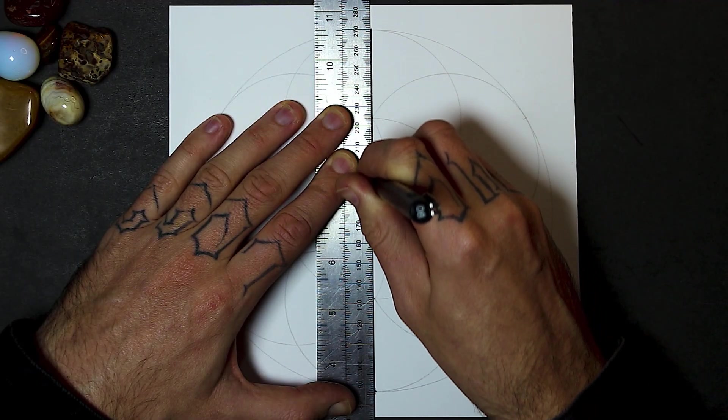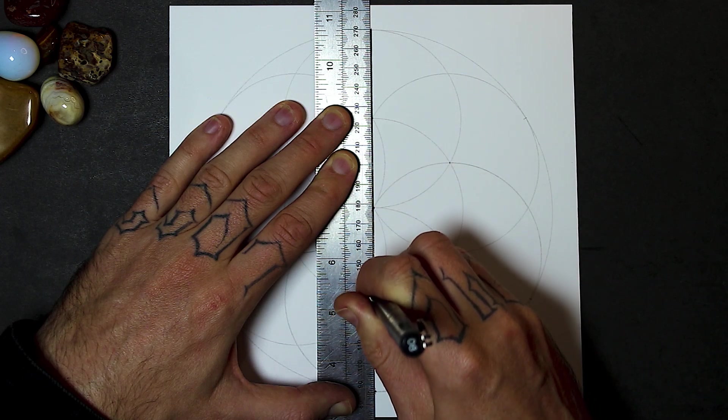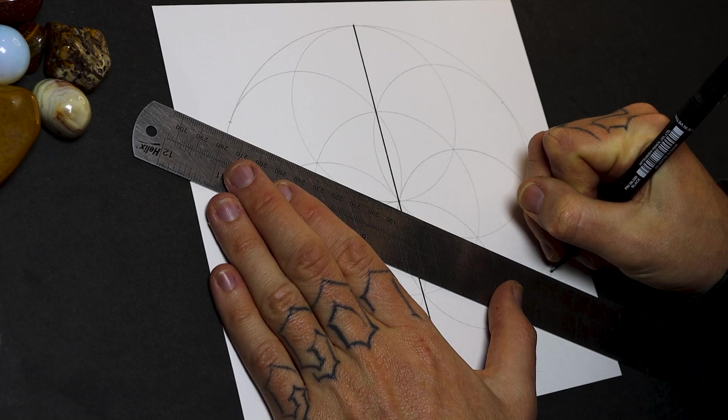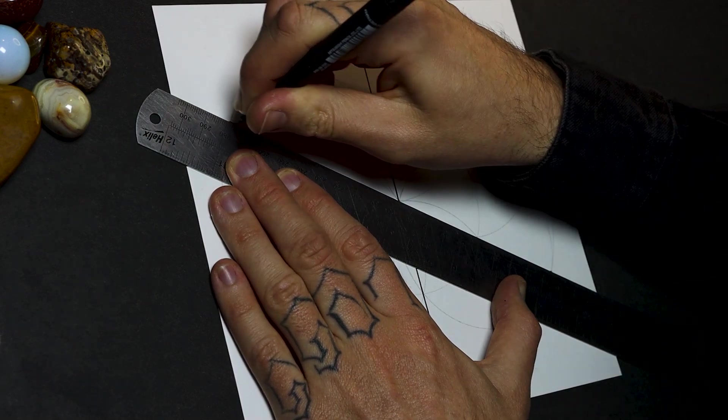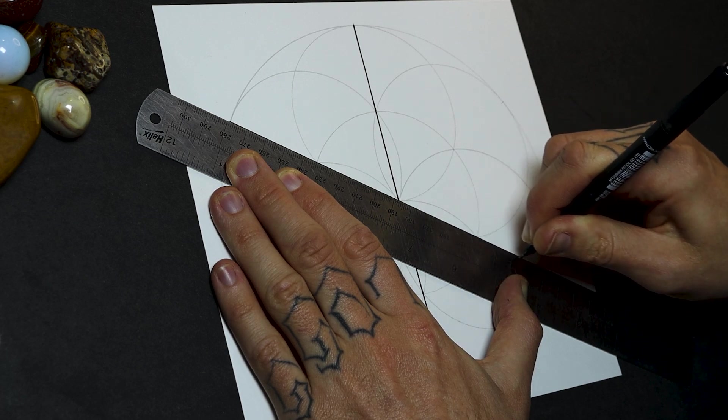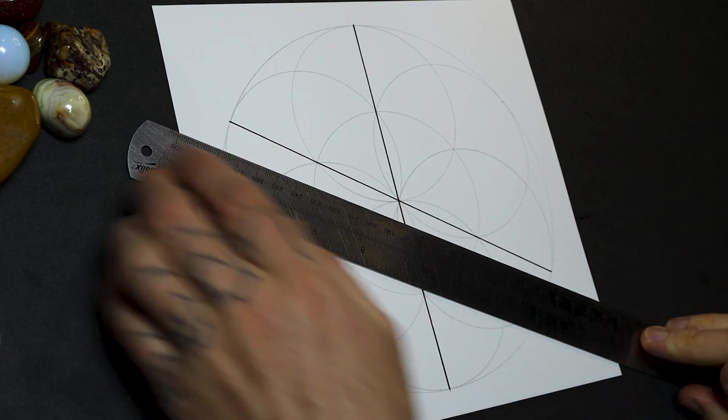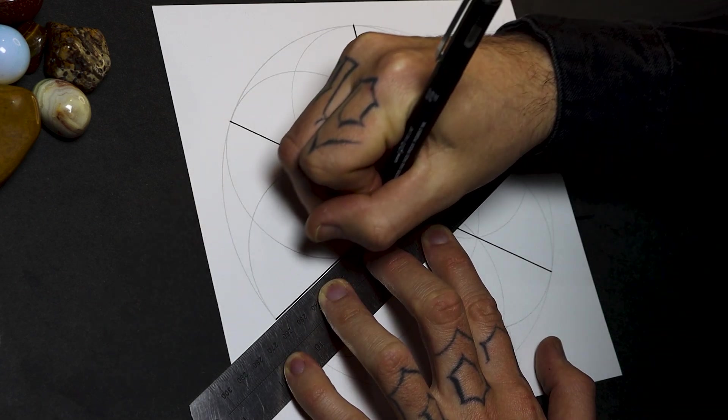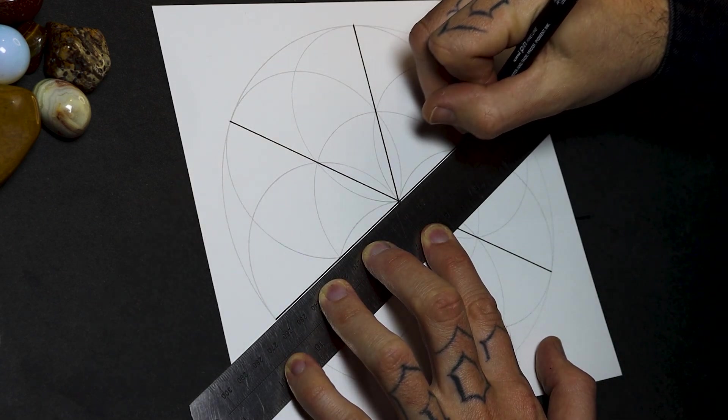When you're drawing the Seed of Life or any other geometric pattern, the pattern is in control, not you. There's no way to draw this pattern without using the points that are given to you by the pattern. You have to let go and let the symbol take you for the ride. You're the one drawing it, or are you?